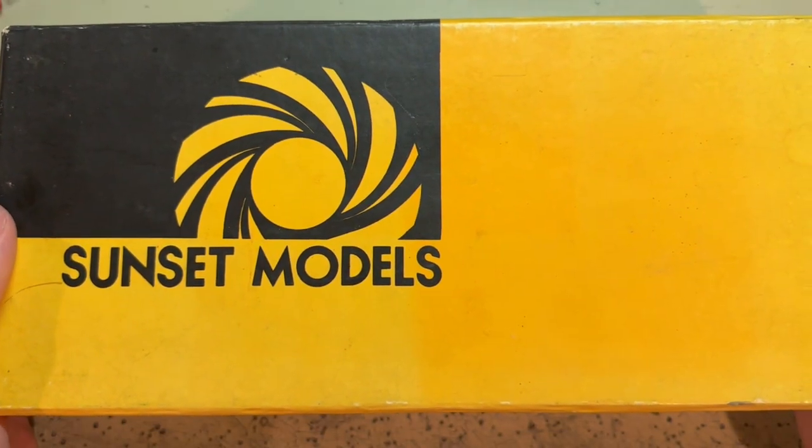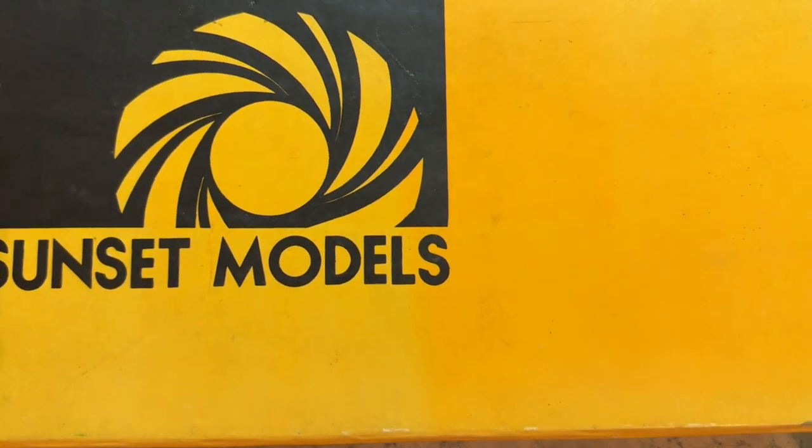For this episode of Darth's Train Shop, we've got a Brass Sunset Models GP7 made by Sam Hongsa.